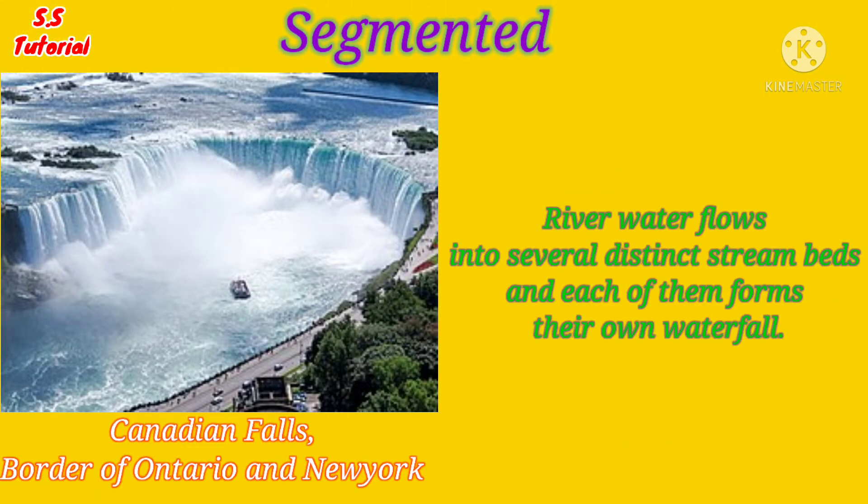When river water flows into several distinct stream beds and each of them forms their own waterfall, this type of waterfall is known as a segmented waterfall. Canadian Falls on the border of Ontario and New York is an example of a segmented waterfall.